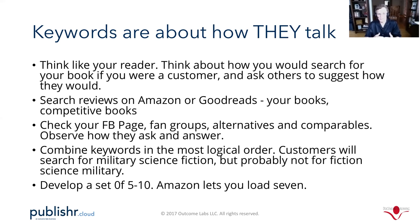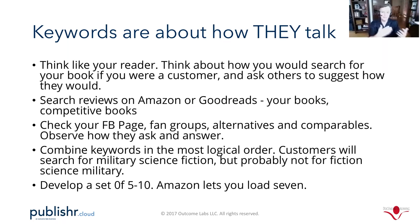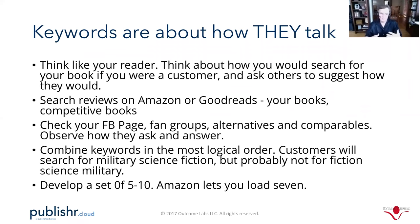One of the best places to find information about how people talk about books is to go to Amazon or Goodreads and look for reviews of your book, or if you don't have many, look at reviews of competitive books. In those reviews, you'll see how people talk about a book like yours — the kinds of nouns, verbs, and adjectives they use. The same goes for Facebook pages and fan groups — look at the questions that get asked, not just on yours but on comparable pages.